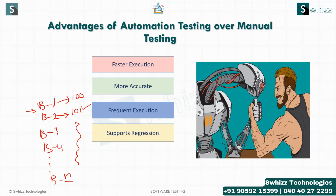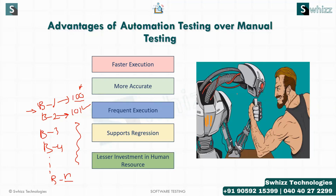That's why automation supports regression testing. You create a test suite using the automation tool and that suite is executed by the machine very accurately and very fast. Also, lesser human resource is needed — a single automation tester can execute what five to six manual testers would do.